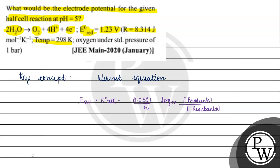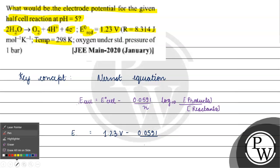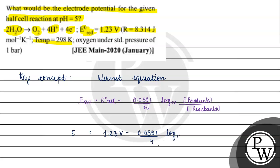In this case, E cell will be equals to E0 cell. The E0 reduction value given is 1.23V minus 0.0591 by N. N is the number of electrons involved, which is 4. Log with the base 10.